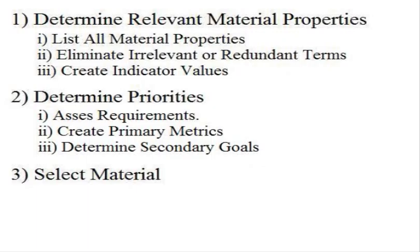we see that we're supposed to determine our goals in looking at these material properties, use those to create combined values which we can more easily use to select materials, and then determine secondary objectives we can use to distinguish between materials that both perform well on our defined scale.